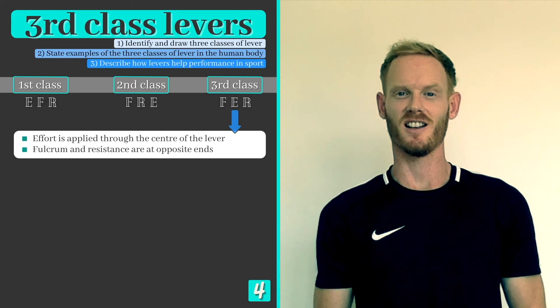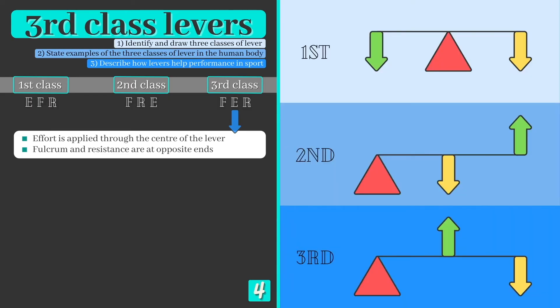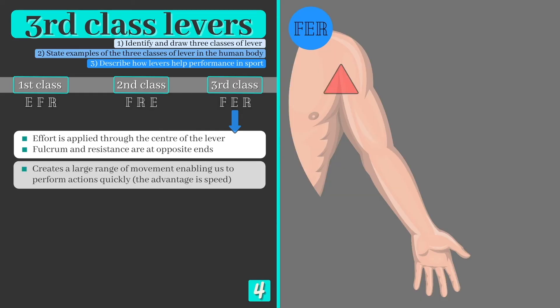Finally, we have a third class lever, where the fulcrum and resistance sit at opposite ends of the lever arm, and the effort is applied between these two components. Because of the distance between the fulcrum and the end of the lever arm, third class levers allow us to produce a large range of movement and generate speed when throwing, running or jumping.